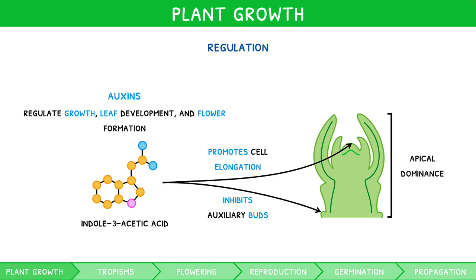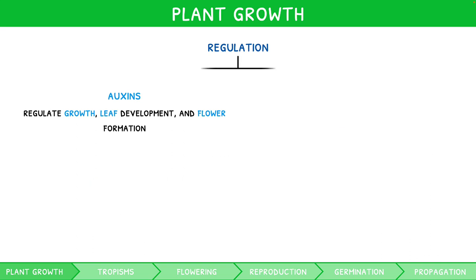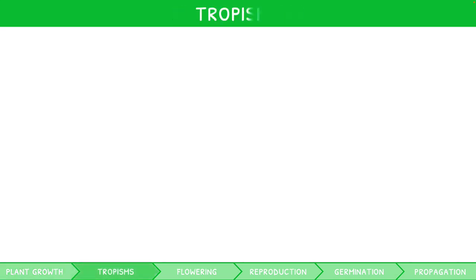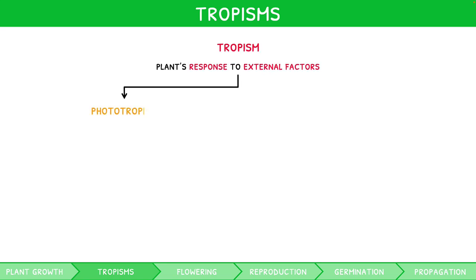Whilst auxins play an important role in shoots, cytokinins are used in conjunction with auxins in the roots to regulate growth. The regulation of plant growth is mostly in response to external factors, a process known as tropism. For your exam, there are two main forms of tropism to learn: phototropism and gravitropism.